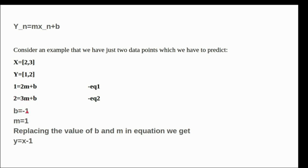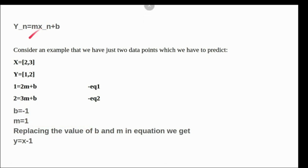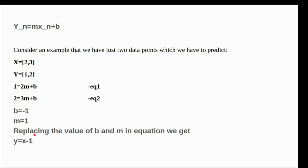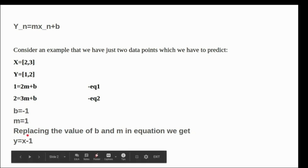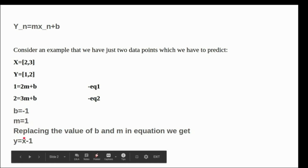We replace m and b in our general equation: substituting m equals 1 and b equals minus 1 gives us y equals x minus 1. If we input x equals 2 we get y equals 1, which is correct. If we input x equals 3 we get y equals 2, which is also correct. We have trained our model with 100% accuracy using the substitution method.